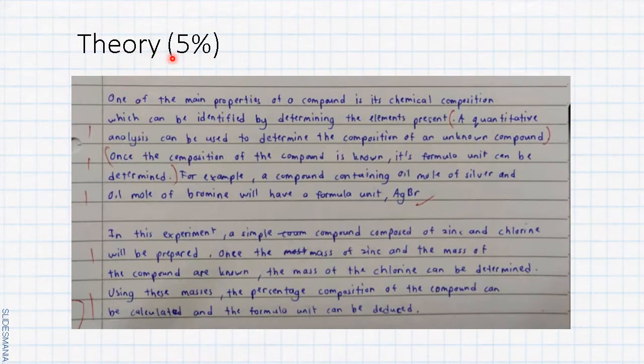Next, theory, total 5% marks. So you have to find five points for this theory. This is a good example. A quantitative analysis can be used to determine the composition of an unknown compound. So you get the first mark.